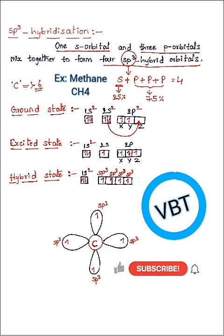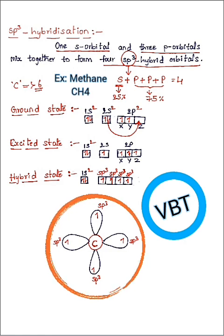According to valence bond theory, unpaired electrons are needed to form covalent bonds. So now these four unpaired electrons have to participate in covalent bonding.